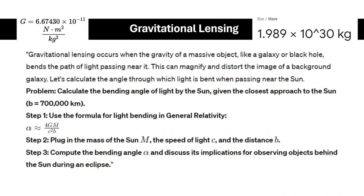Plug in the mass of the Sun, the speed of light, and the distance b. Then compute the bending angle α and discuss its implications for observing objects behind the Sun during an eclipse.